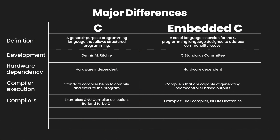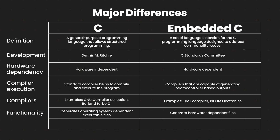Next up is a major difference between C and embedded C, which is functionality. C compilers generate operating system dependent executable files, whereas embedded C compilers generate hardware dependent files. These hardware dependent files can be uploaded into the microcontroller to perform a particular task.